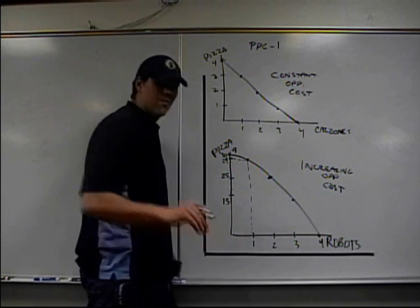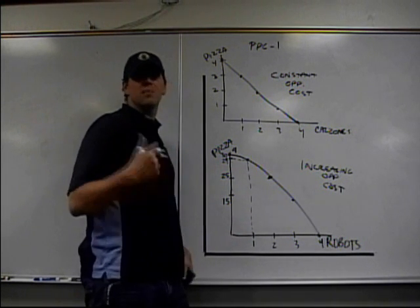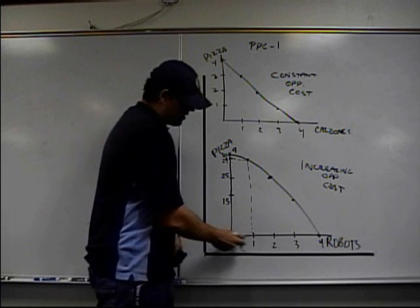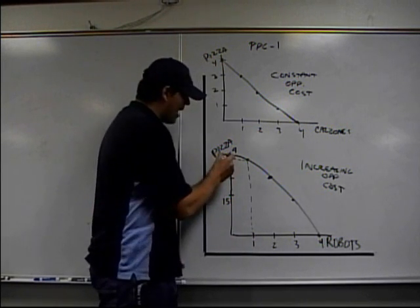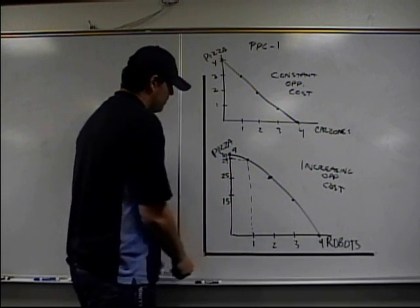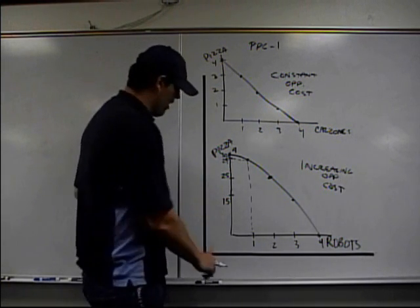So when I produce my first robot, I'm going to take out my engineers, my PhDs, all those people that make the first robot, I get one robot, I don't give up very much pizzas. In fact, they're not particularly good at pizzas. That's all I give up.